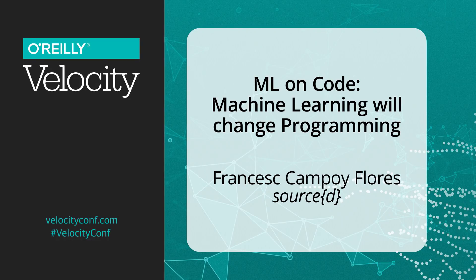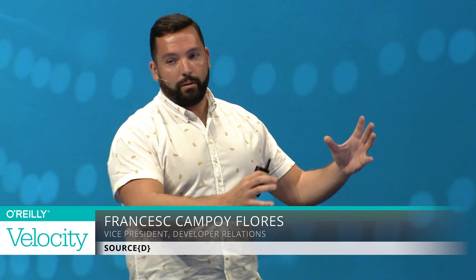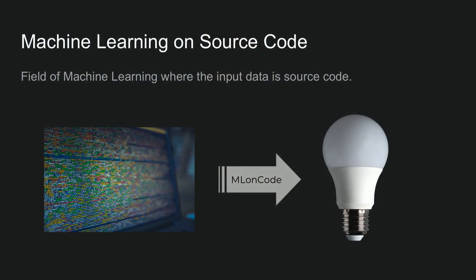Let's talk about machine learning on source code. What is machine learning on source code? It is machine learning that you apply on source code — the input is source code. That is the main thing. Rather than learning from images, natural text, videos, or whatever, we're learning from source code itself.